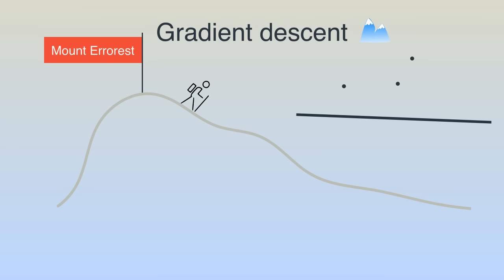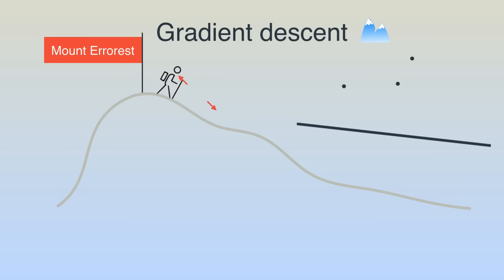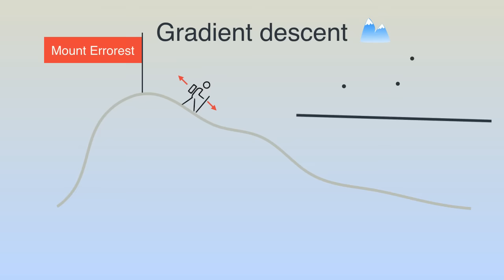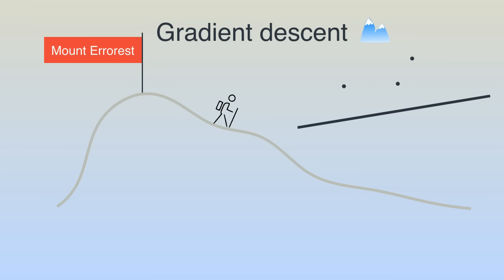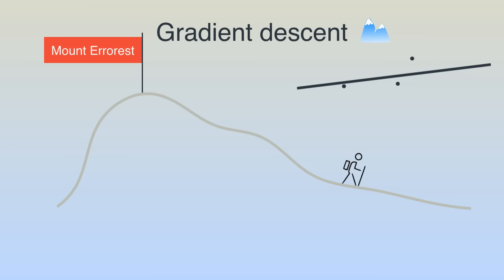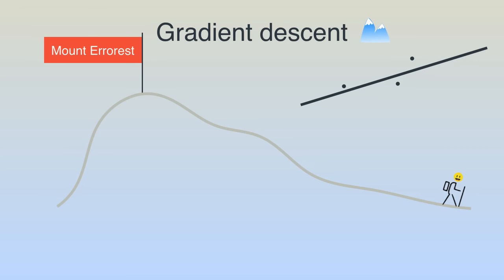We can think of gradient descent as trying to descend from a mountain — Mount Errorist. The higher we are, the larger our error is, so descending means reducing the error. We look at our surroundings and figure out which way we can descend more. Going left means ascending — our error increases, equivalent to moving the line away from the points. Going right means descending — our error decreases, equivalent to moving the line closer to the points. We keep taking steps to the right, repeating until we reach the minimum error, which gives us the best line fit.